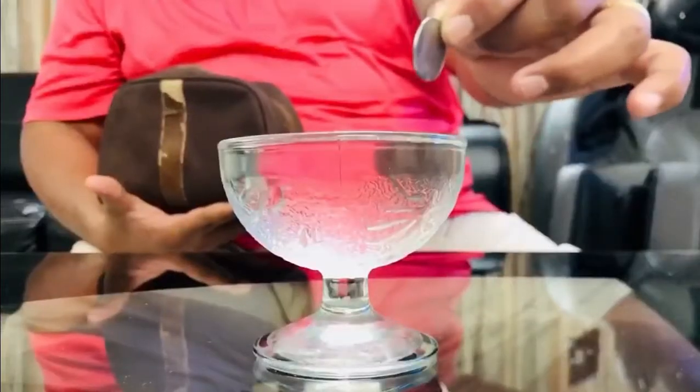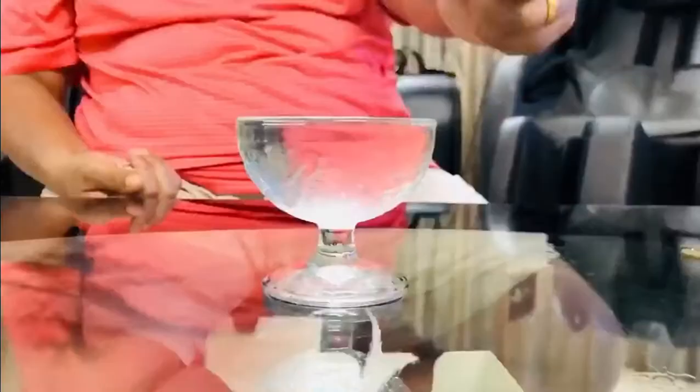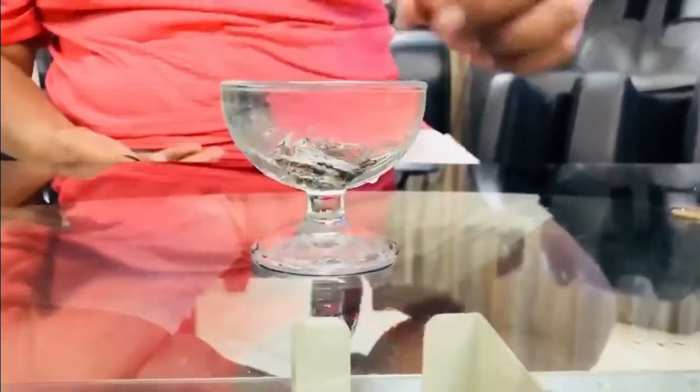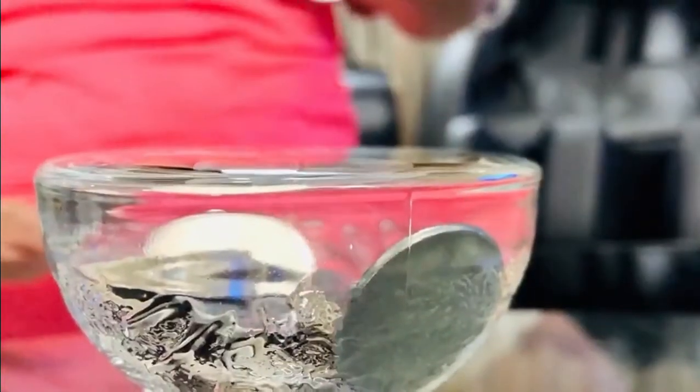How many coins do you think will stay in the glass before water falls out of it? Let's see if my dad's number is right. So, we started putting the coins inside and it took 26 coins in total before the surface tension broke.